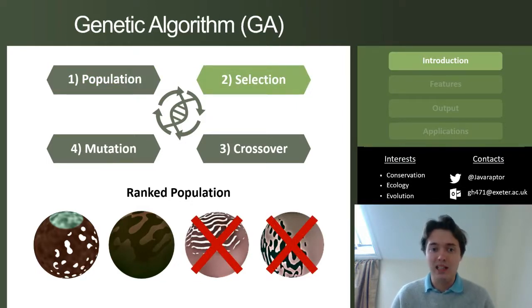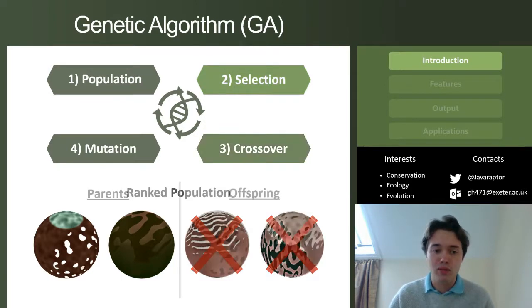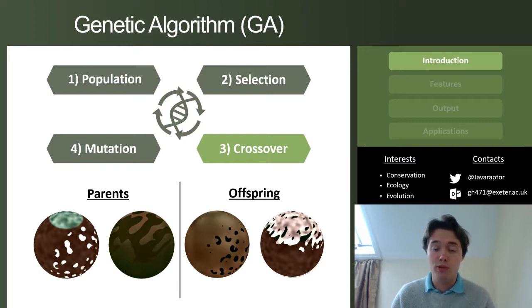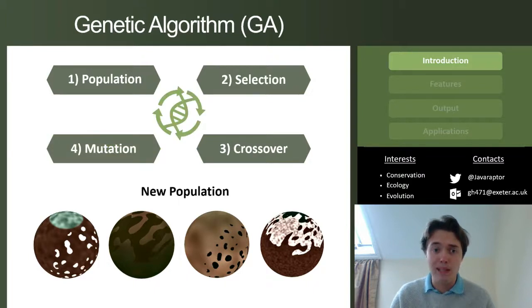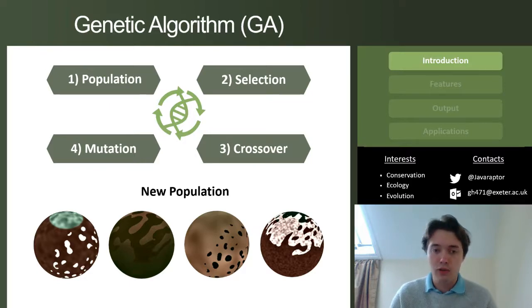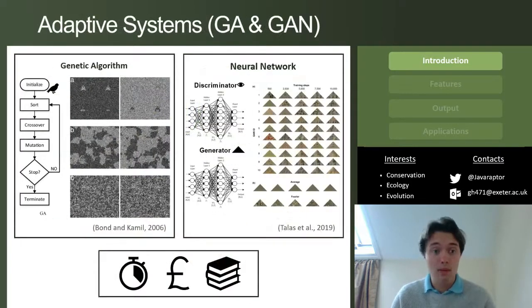You delete the ones which are the easiest to find, allow those surviving individuals to reproduce producing offspring through genetic crossover, and then provide a sprinkle of mutation to those offspring in order to maintain genetic diversity. You repeat this again and again for tens or in some cases hundreds of generations. This idea of testing camouflage optimization with evolution is not novel.